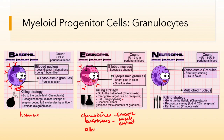Eosinophils are highly associated with allergic reactions and in particular asthma. You may have heard of eosinophilic asthma — this is an excess of eosinophils found in the lower lobes of the lung. It promotes inflammation, mucus secretion, fluid secretion, and smooth muscle contraction.